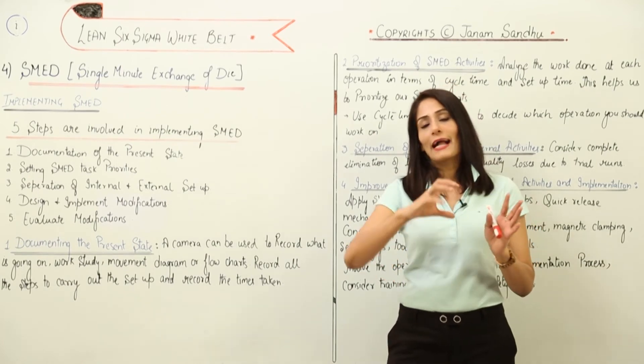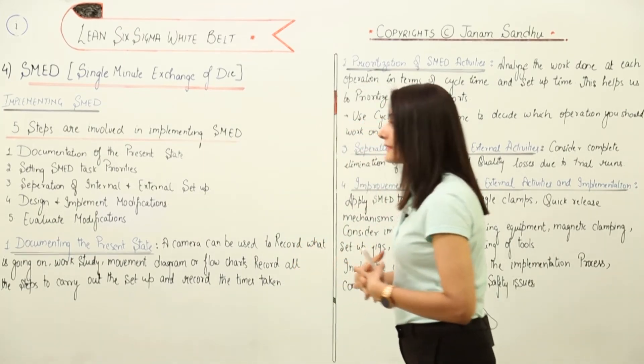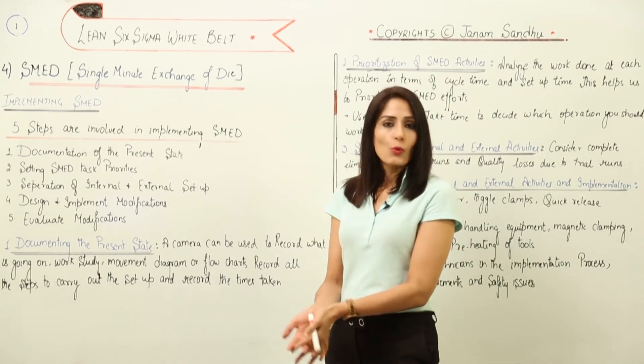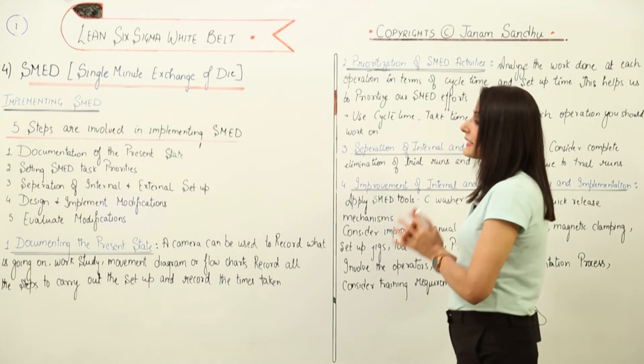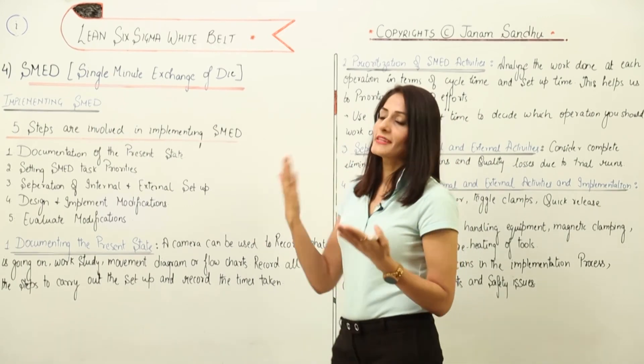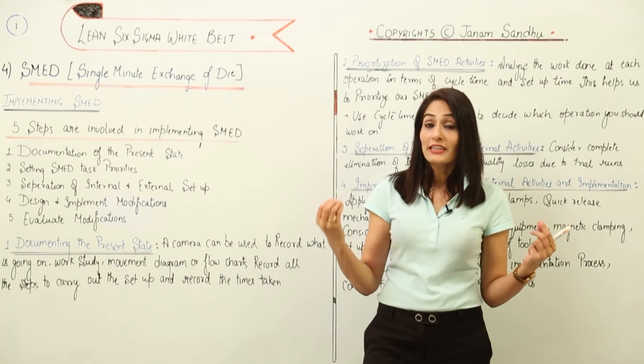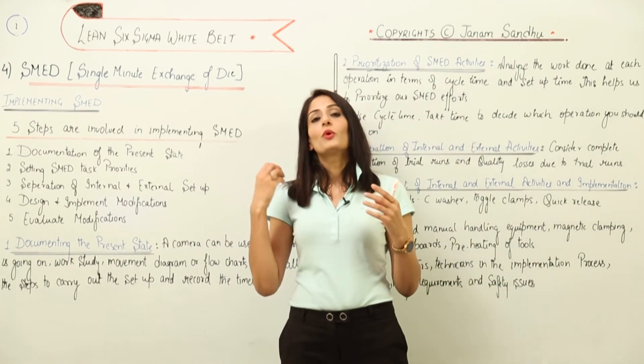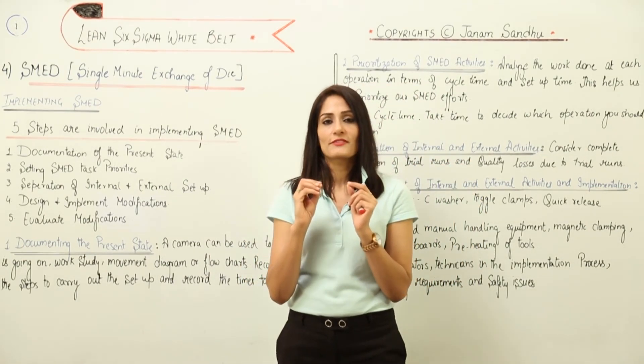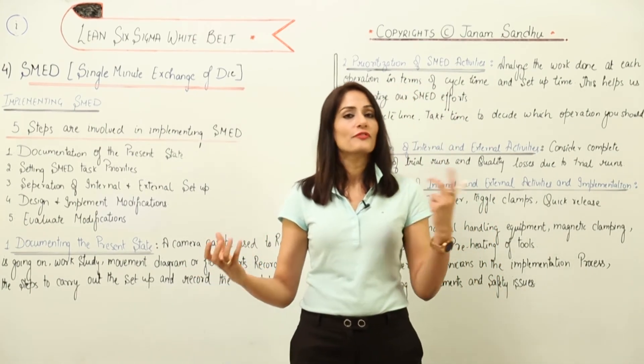Then you work on separation of internal and external setup - you know why it is important. Design and implement modifications. This is something which is necessary. Once you understand the current state, you understand what are the tasks which you need to prioritize, then you understand which tasks are taking maximum time. What you actually need to understand is that you also have to work on certain processes - you may need some changes, fixes here and there, so you should be ready for that.